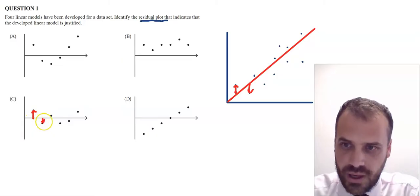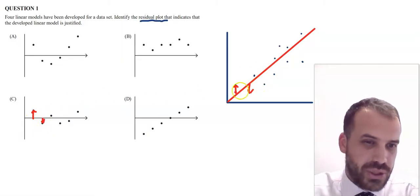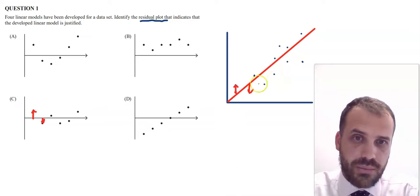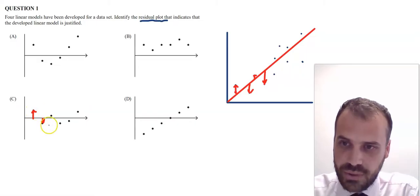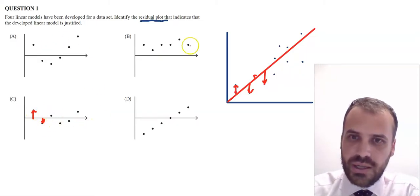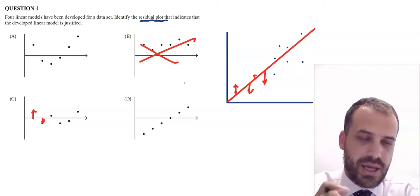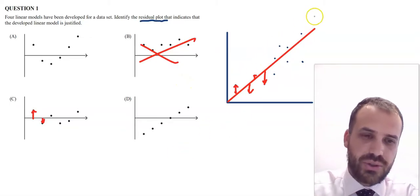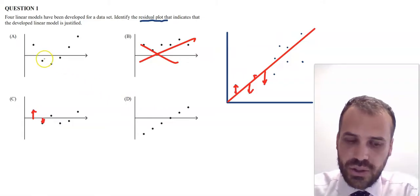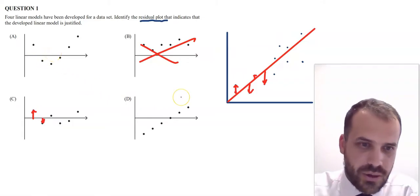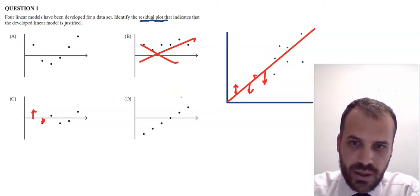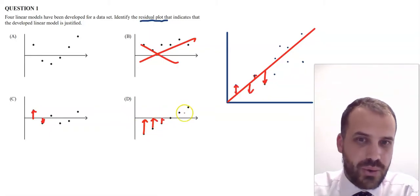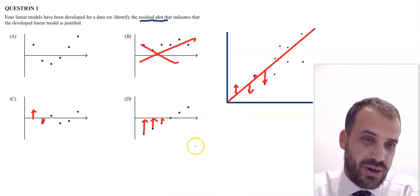You should expect roughly an equal number of dots above the line as below the line. That cancels one option out — it can't be the one where all dots are above the line. You should also expect the dots above and below to be roughly scattered, not something where points progressively move from very far below the line to all being above the line.